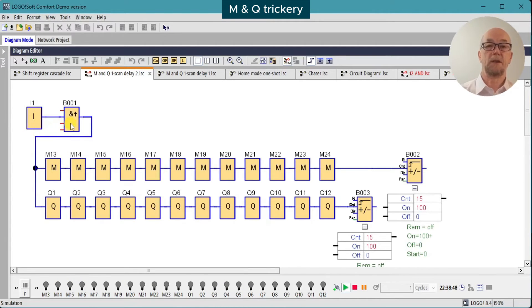Here I've used an AND edge general function to just give a single pulse to trigger the chain of M's and Q's.